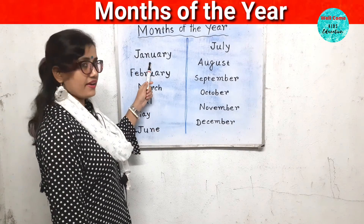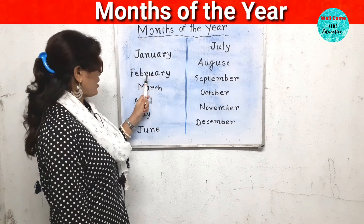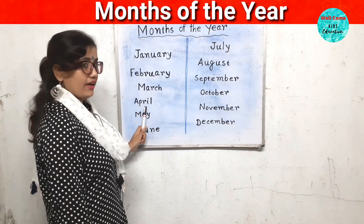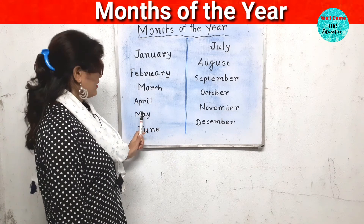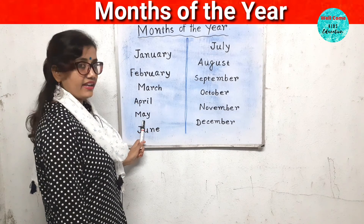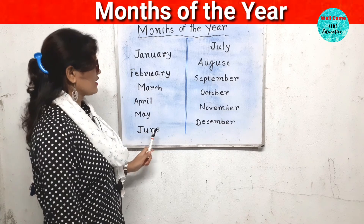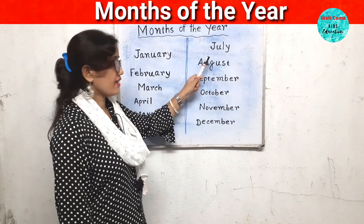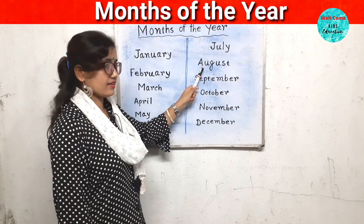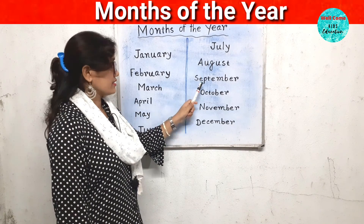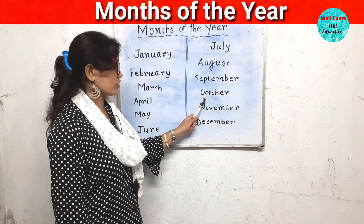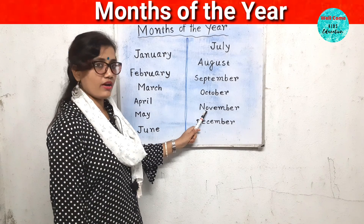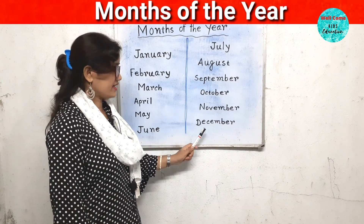January. February. March. April. May. June. July. August. September. October. November. December.